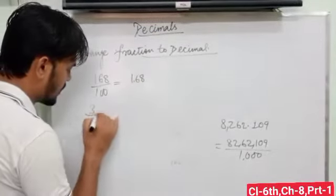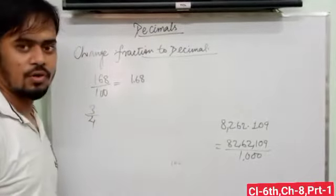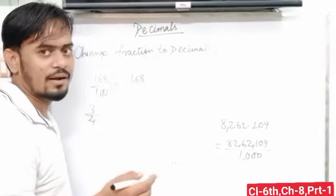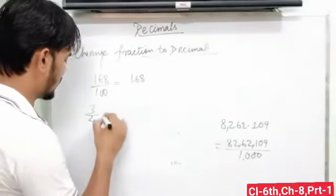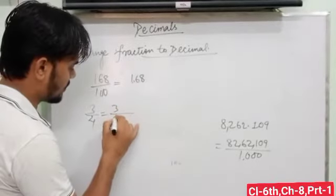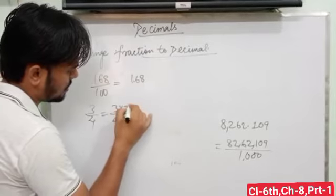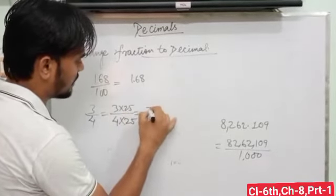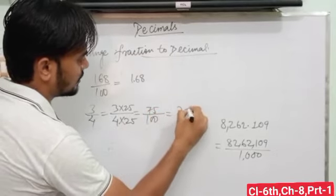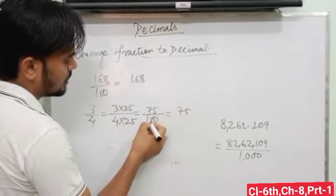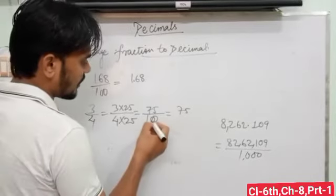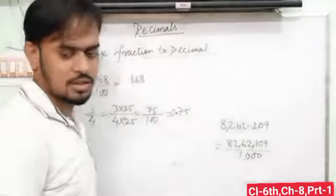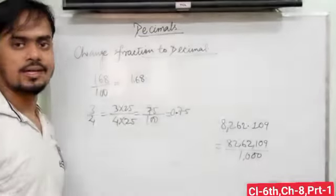Suppose your number is 3 upon 4. Convert 4 as a multiple—when we multiply 4 into 25, we get 100 as the equivalent fraction. We got 75 upon 100. So write here 75 and put the decimal after two digits. One, two. So the answer is 0.75.